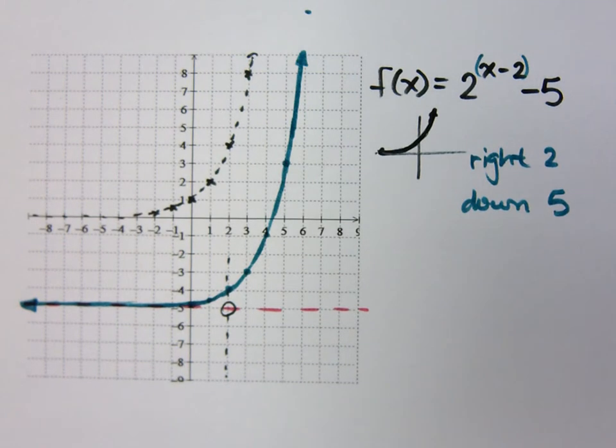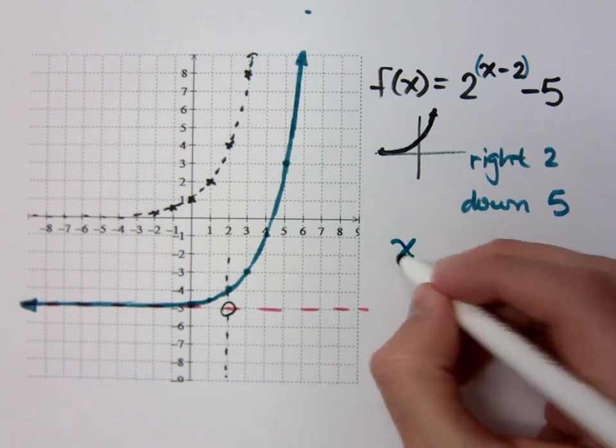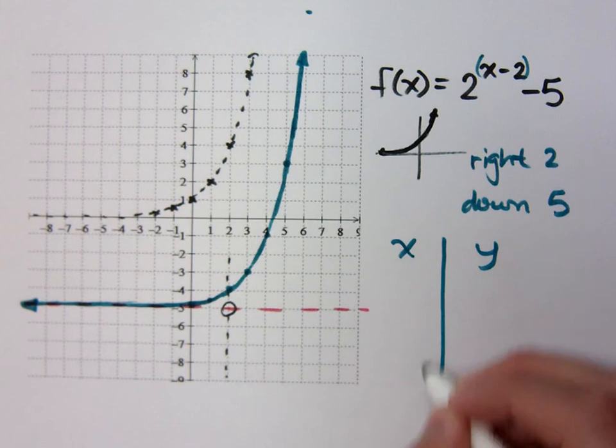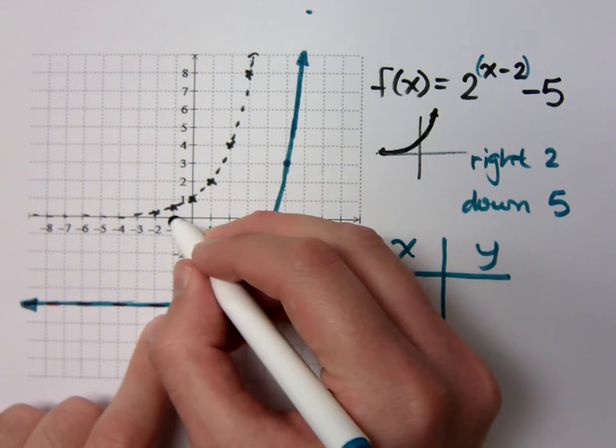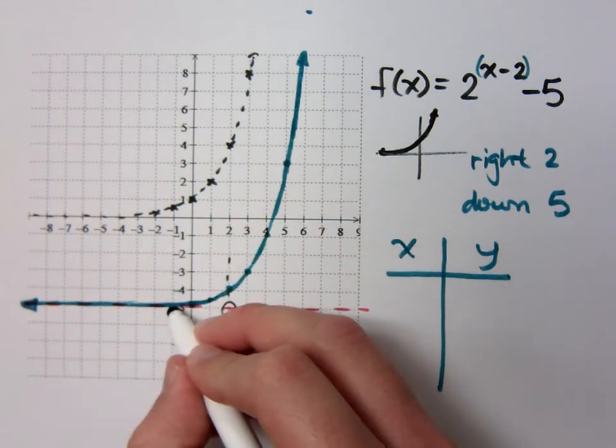But if you did a t-table for this, you'd come up with different y's? Nope. You'd come up with the exact same ones. Well, if you'd replace x with negative 1, you're going to get 2 to the negative 3rd. But if I replace with negative 1, I'm going to have this point. You're talking about a t-table? No, I understand that.